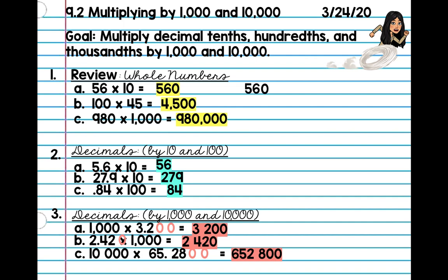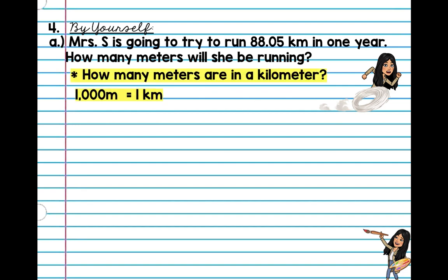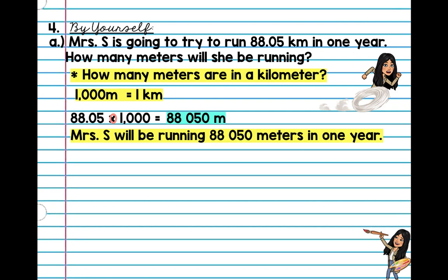Alright, so you should have all these written in your notebook. We're going to do three word problems. Number four: Miss S is going to try to run 88.5 kilometers in one year. How many meters will she be running? You just need to ask yourself, how many meters are in a kilometer? From what you learned in measurement, we know kilo means 1,000, so 1,000 meters equals a kilometer. All you do is take 1,000 and multiply that by 88.5. So we have 88.5 times 1,000 — move over 1, 2, 3 — so my number is 88,050 meters. Miss S will be running 88,050 meters in a year.